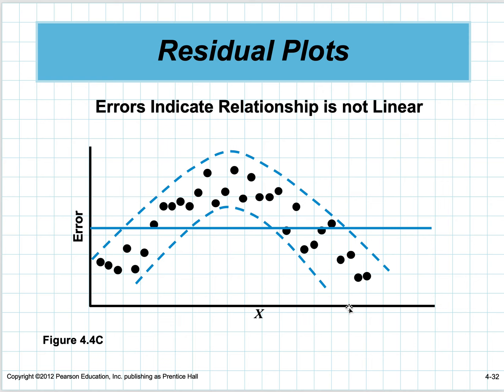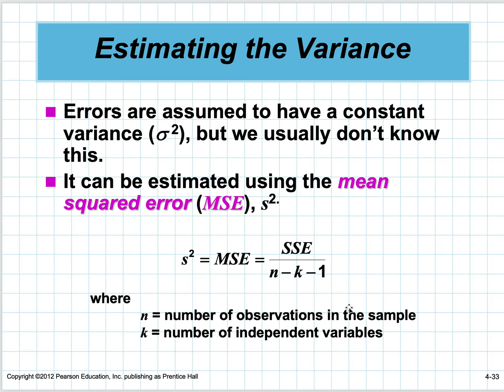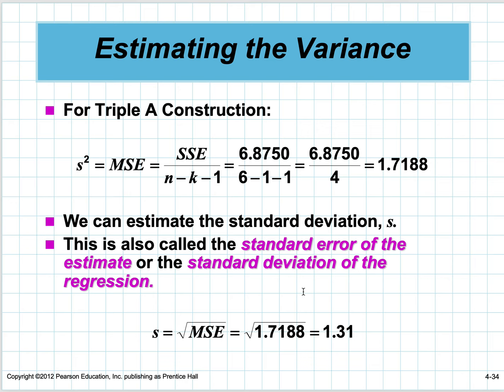Errors are assumed to have a constant variance, but we usually don't know what it is. We measure it by taking the sum of squared errors divided by n minus k minus 1, where n is the number of observations and k is the number of independent variables. With just two variables, it's SSE divided by n minus 2—they call that degrees of freedom. The standard deviation is the square root of that, or 1.31.